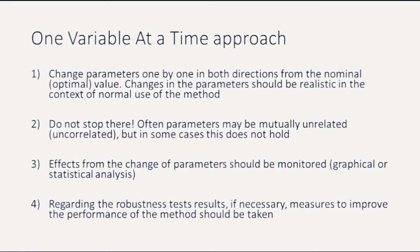Secondly, if you change something, do not stop there. Often parameters might be mutually unrelated or uncorrelated, but in some cases this does not hold. For example, change in mobile phase pH can decrease resolution between two adjacent peaks. Likewise, increase of mobile phase flow rate can also lead to the decrease of resolution. While separately any of these two changes can still lead to the loss of resolution, their occurrence together might lead to peak overlap.